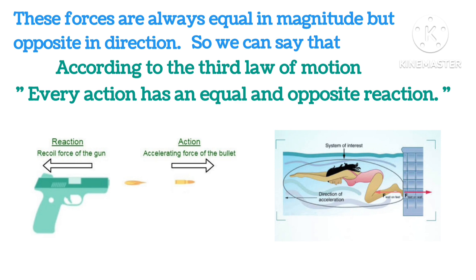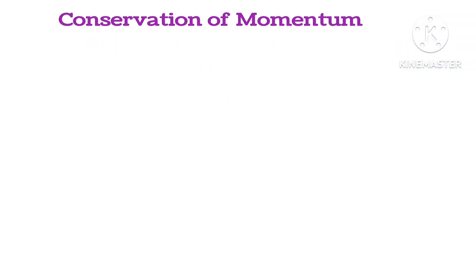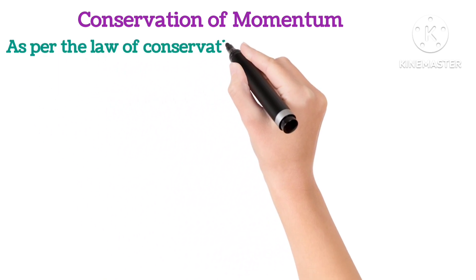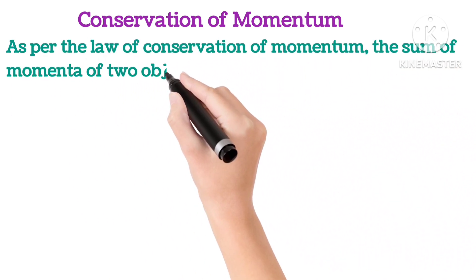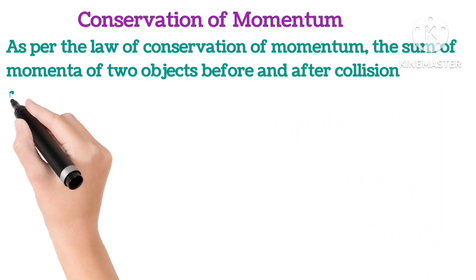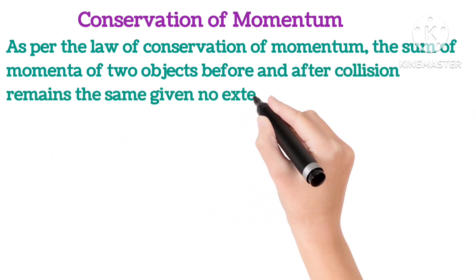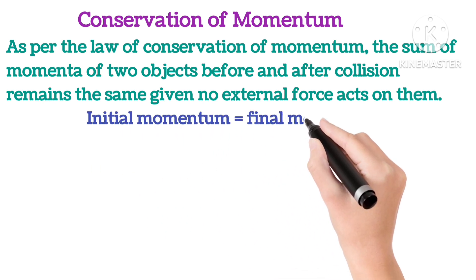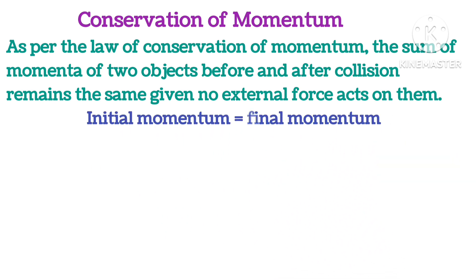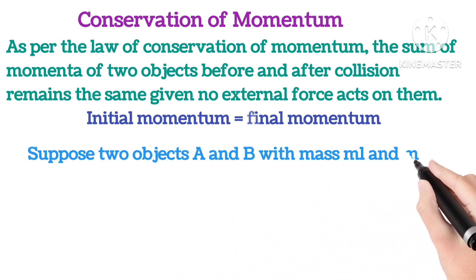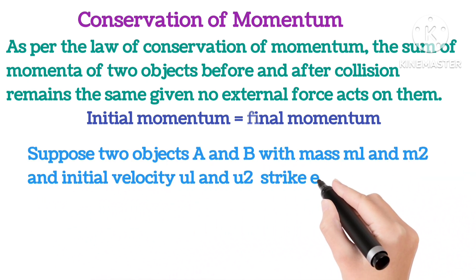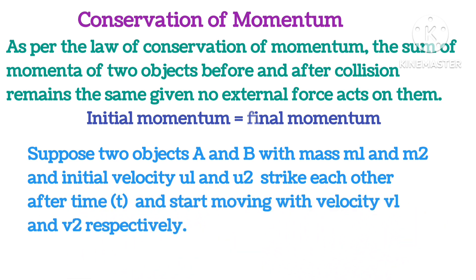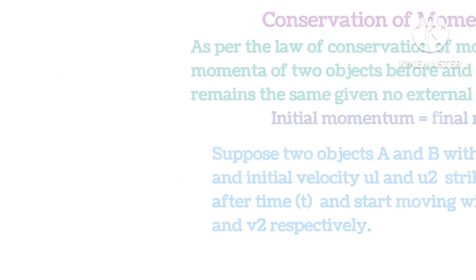Conservation of momentum. As per the law of conservation of momentum, the sum of momenta of two objects before and after collision remains the same, given no external force acts on them. So, initial momentum is equal to final momentum. Suppose two objects A and B with mass m₁ and m₂ and initial velocities u₁ and u₂ strike each other and after time t start moving with velocities v₁ and v₂ respectively.